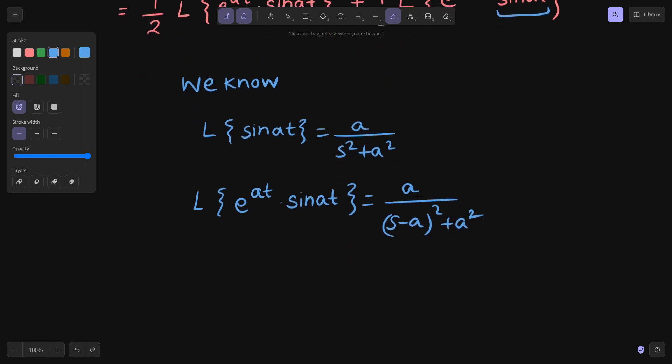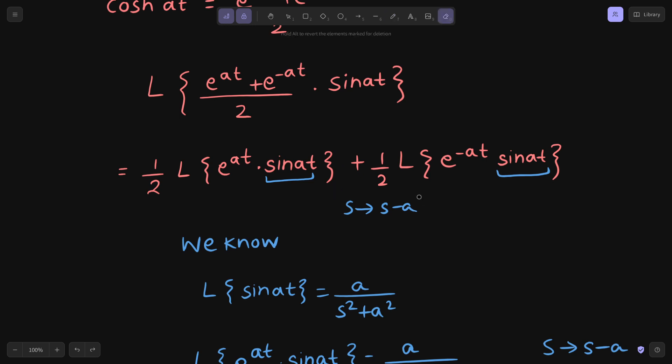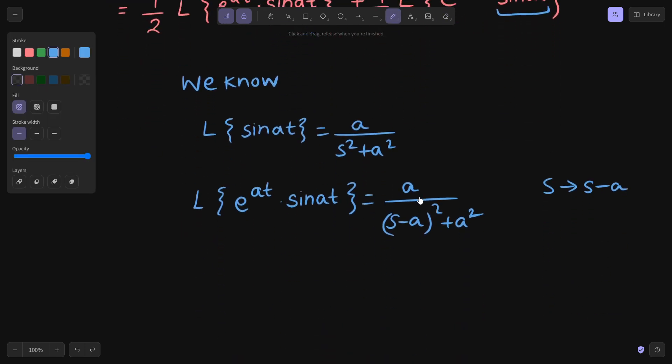So when it is multiplied by e power at, we replace s by s minus a. Some people do it in the same step only, but I am solving it separately so that you can understand it better.